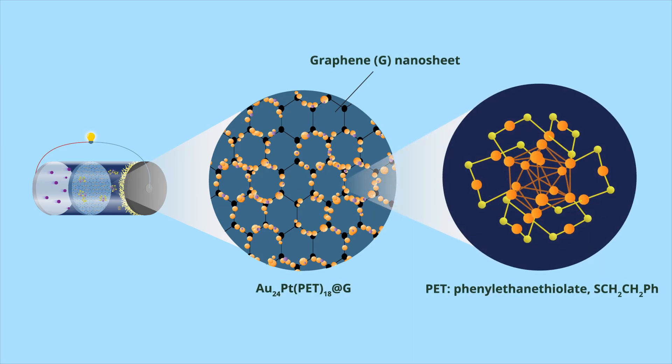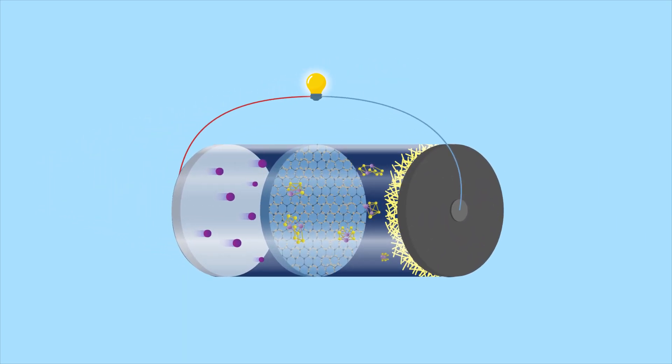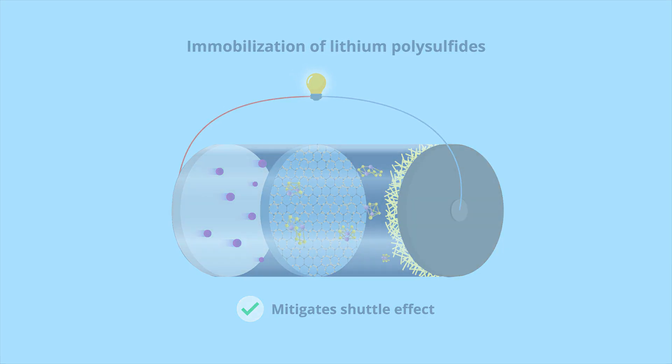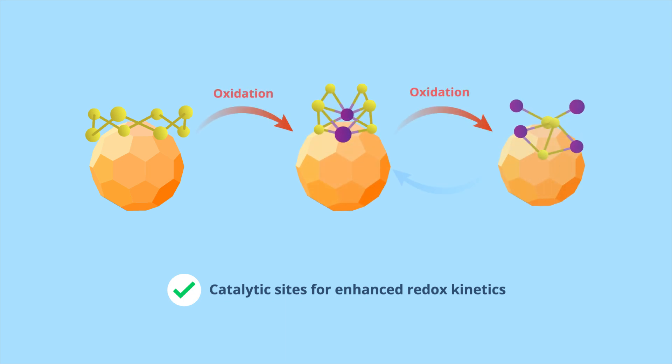The metal nanoclusters effectively mitigated the shuttle effect by immobilizing the intermediate lithium polysulfide species and acted as catalytic sites for enhancing the redox kinetics of sulfur.